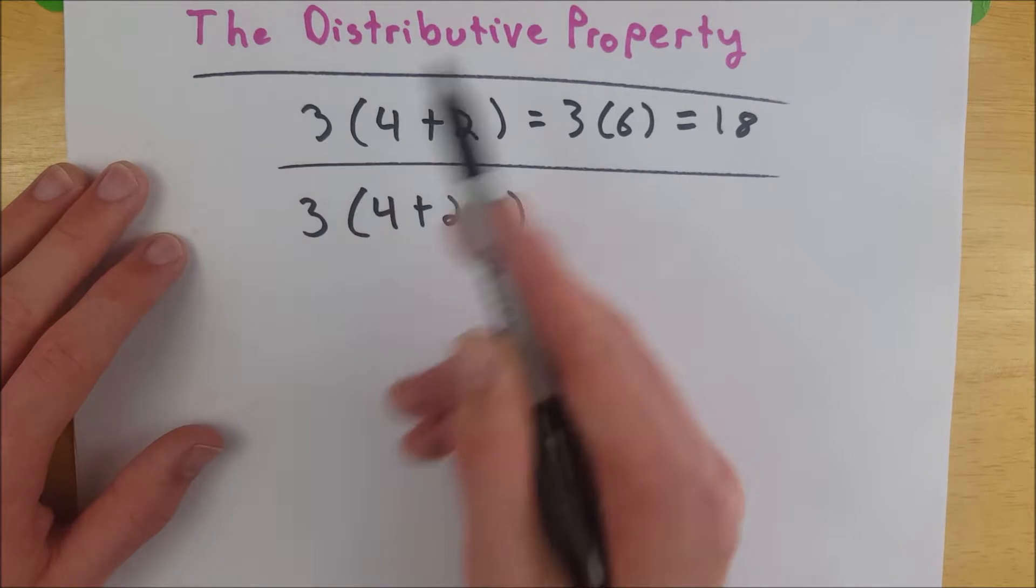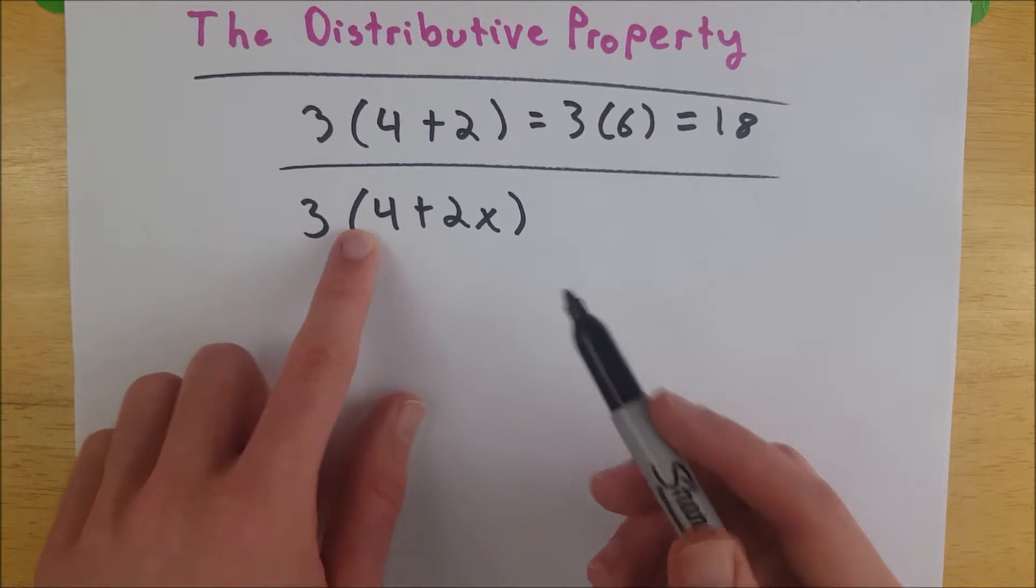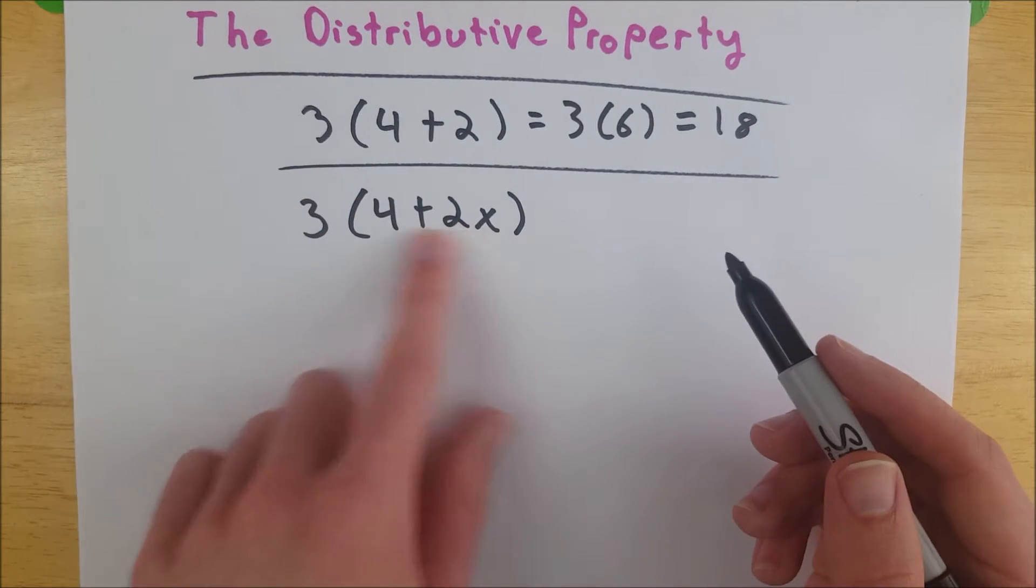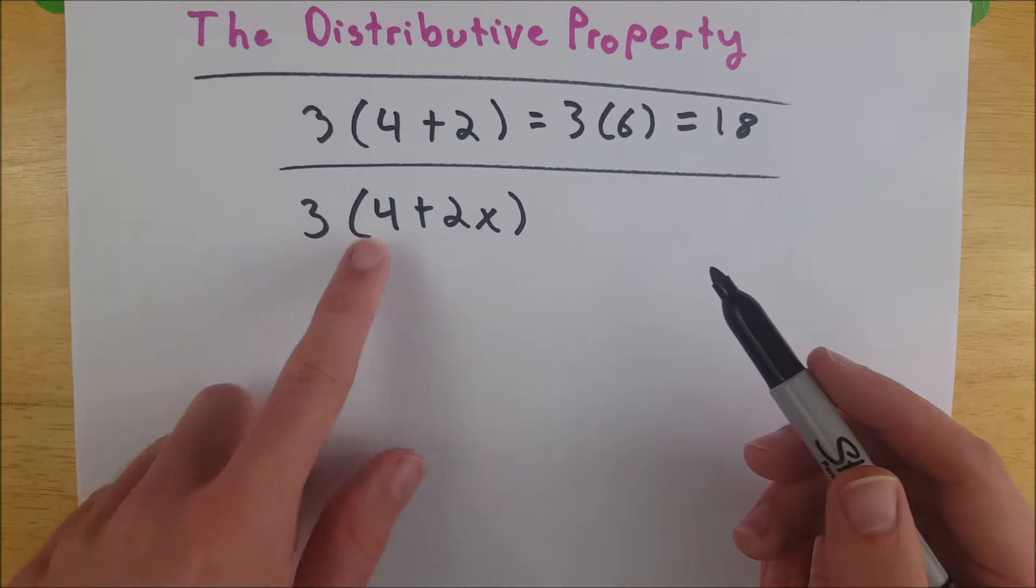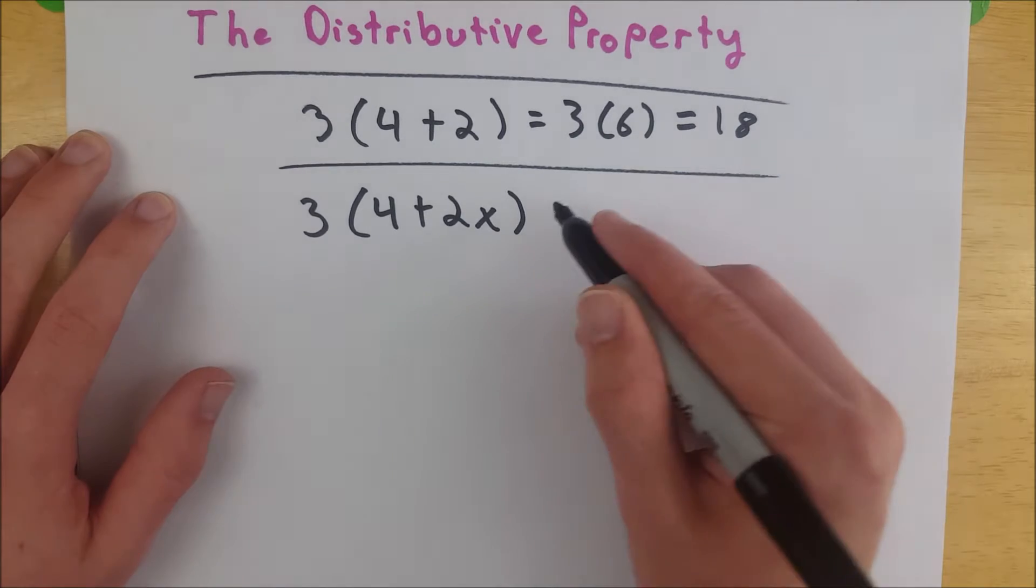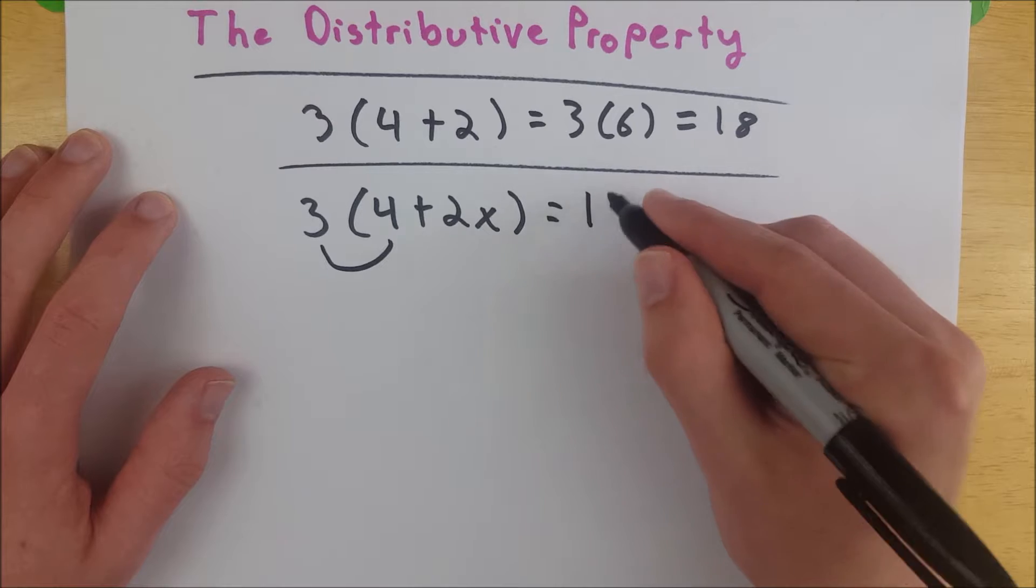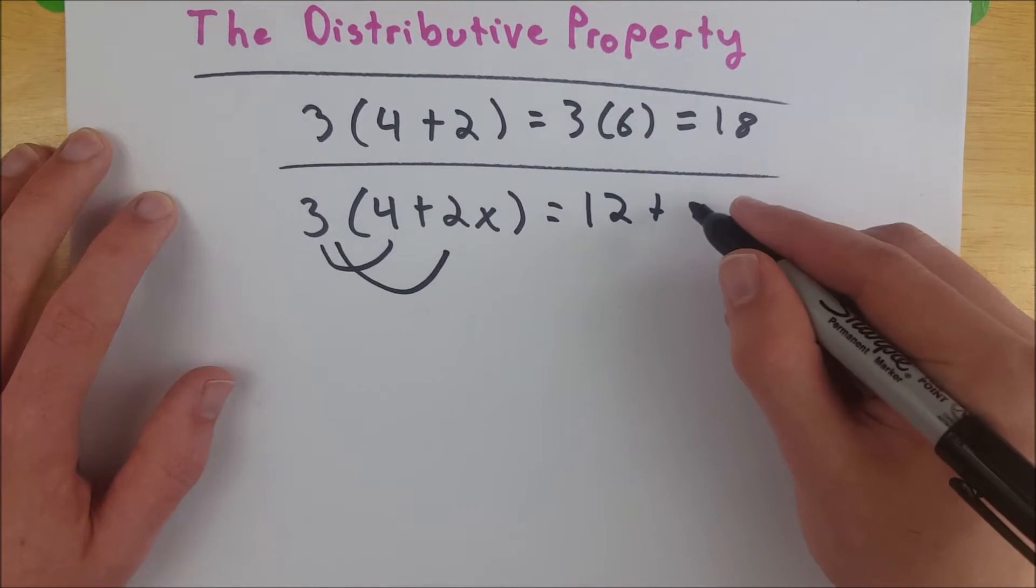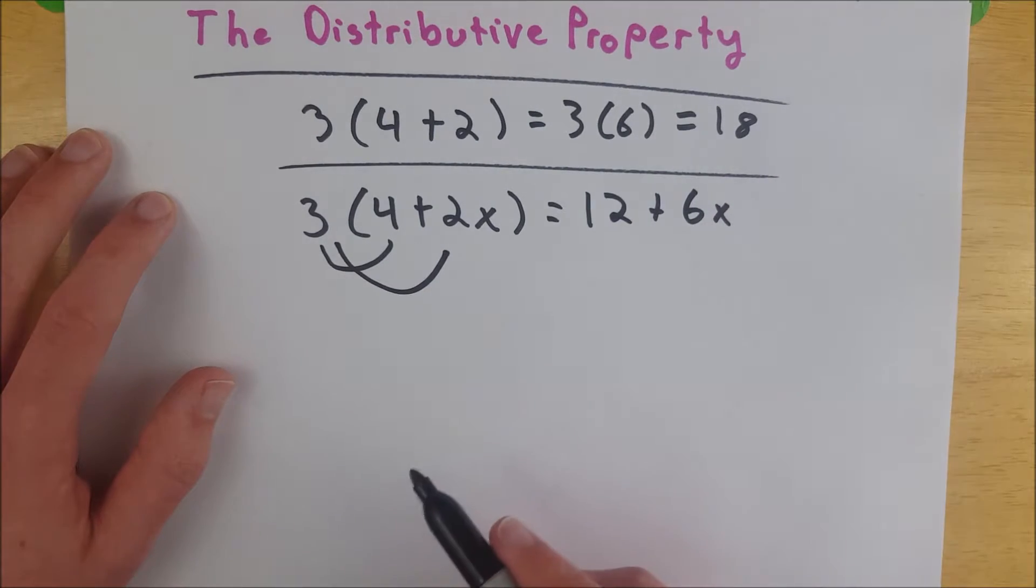But we can still simplify this expression by using the distributive property. The distributive property, it's basically all in the name. It just tells us when we've got a number outside of some parentheses where there's addition or subtraction being done, all you have to do is distribute the 3 to every quantity inside the parentheses. So this becomes 3 times 4, which is 12, plus 3 times 2x, which is 6x.